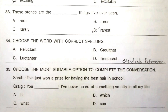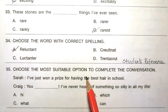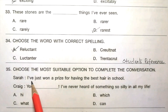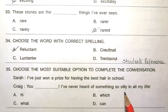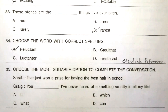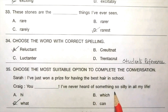Question 34: Choose the word with correct spelling. Read the given options carefully. The answer is A, reluctant. Question 35: Choose the most suitable option to complete the conversation. Sarah: 'I have just won a prize for having the best hair in school.' Greg: 'You dash? I have never heard of something so silly in all my life.' Options: hi, which, what, can. The answer is C, what. 'You, what? I have never heard of something so silly in all my life.'